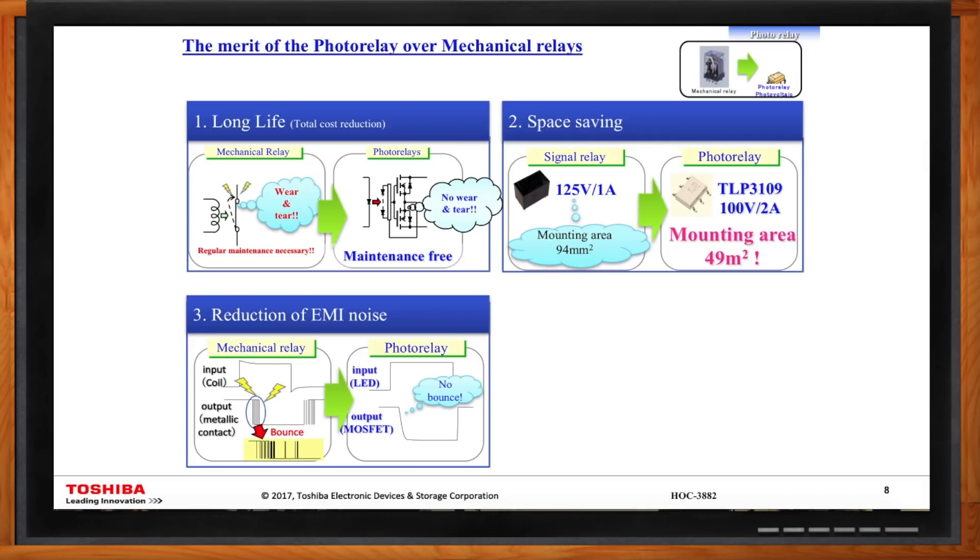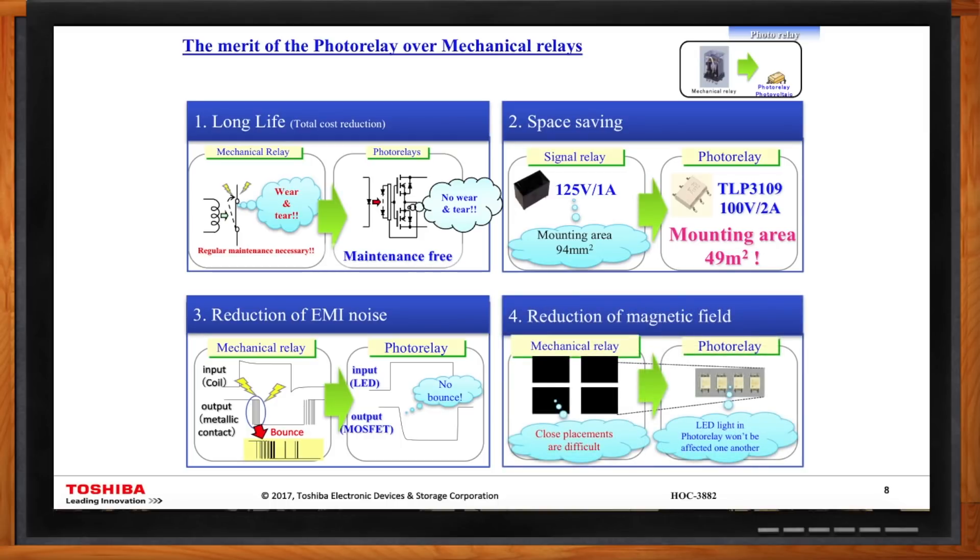The third area that we address is the reduction of EMI noise. As you know, with mechanical relays, you have the coil and also the actual metallic contact. You're going to see a lot of noise bounce in your circuitry. You won't see that in photorelays. So, that's a big advantage. Last but not least is the magnetic field. Again, if you have an application where you need to put a lot of relays in a very close proximity, that's going to generate a magnetic field. Once again, you will not have to face that kind of problem with photorelay.